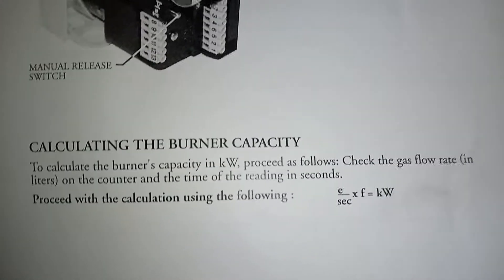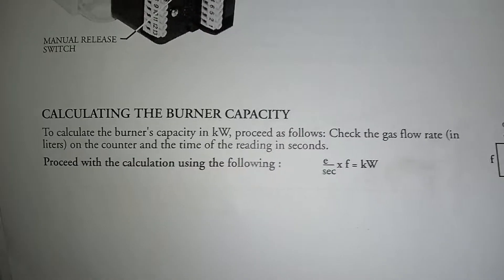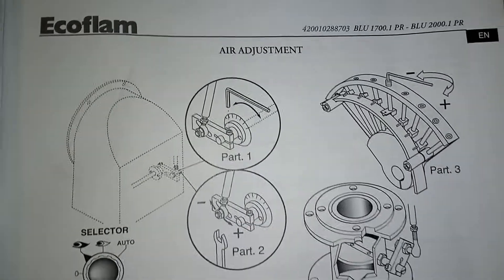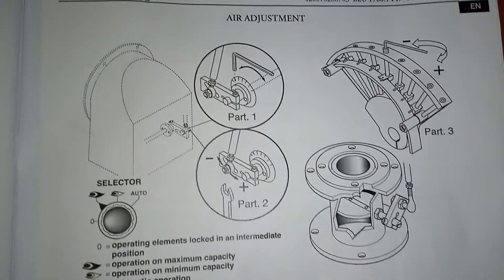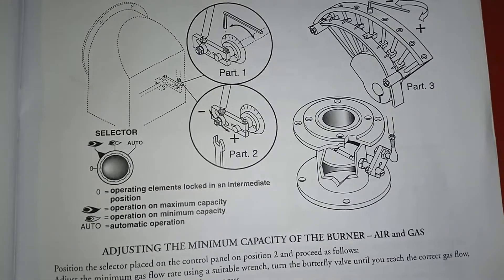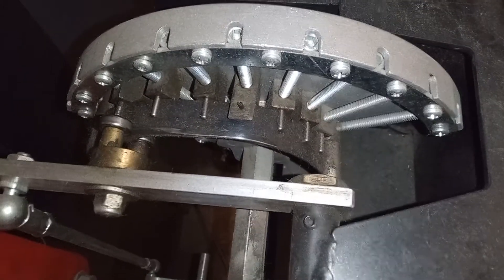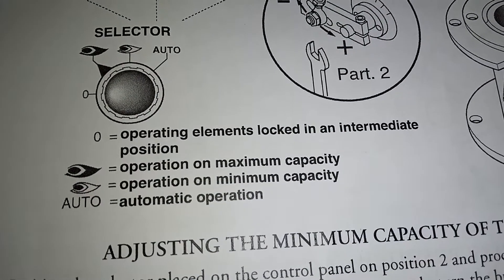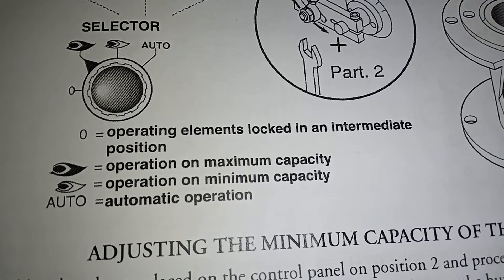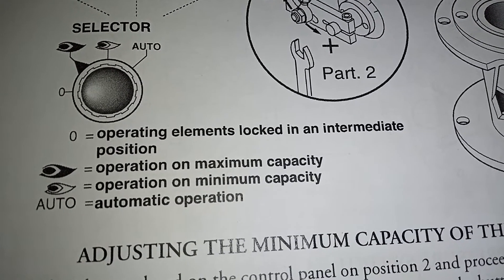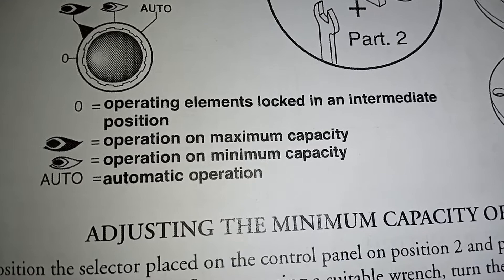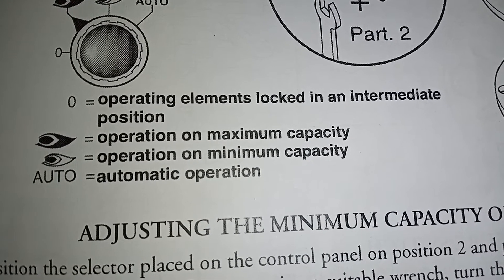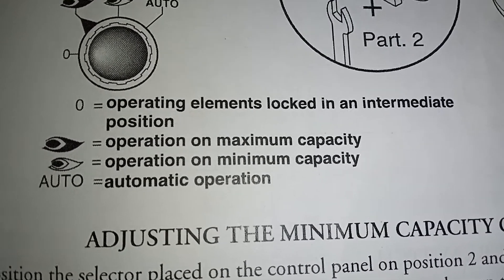Then calculating the burner capacity. Air adjustment. Then our selector switch with our operation elements locked in an intermediate position, and then we've got operation on maximum capacity, operation on minimum capacity, and then automatic.